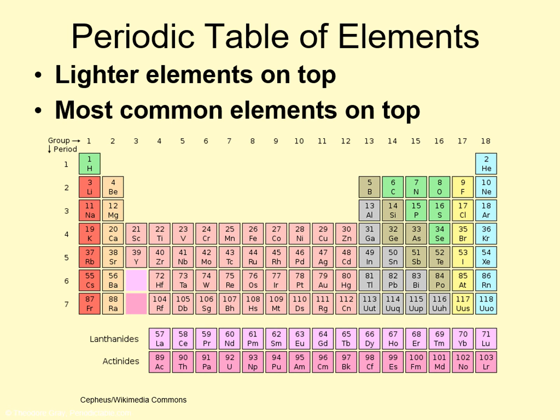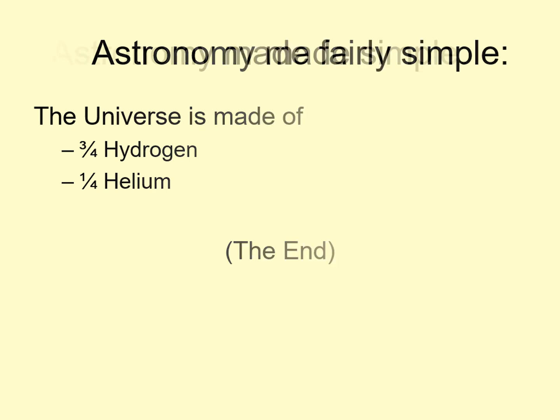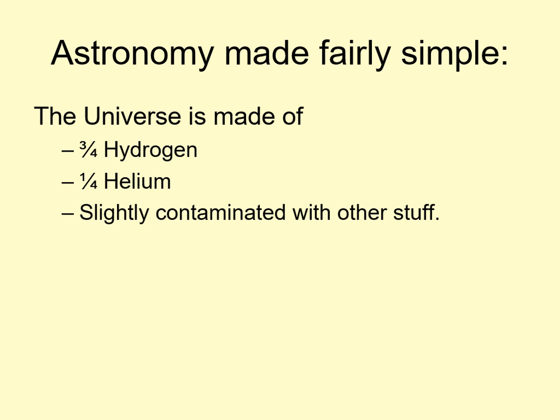In particular, notice the two elements at the very top: hydrogen and helium. Between them, they make up around 99% of the atoms in the universe. This leads us to a very important summary of astronomy: the universe is made of three quarters hydrogen and one quarter helium. That's the course. Any questions? If that's a little too simple, how about this: the universe is made of three quarters hydrogen and one quarter helium, but it's also slightly contaminated by heavier stuff. Of course, that slight contamination has some interesting effects that we may want to look at a little more closely.